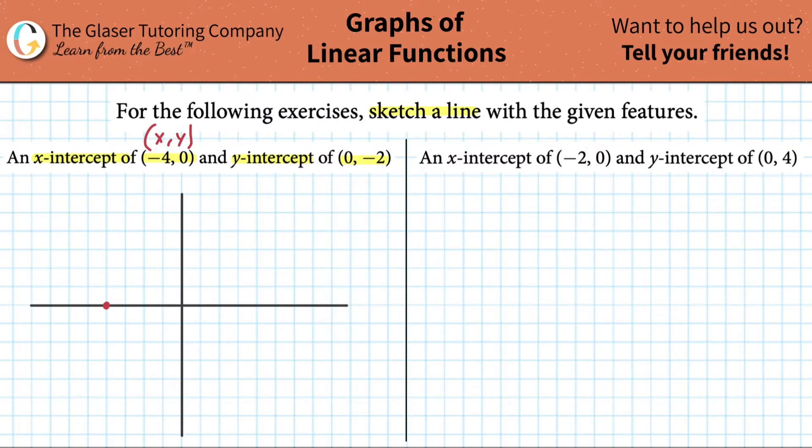Same thing now, not to belabor the point. Let's do the y-intercept. So it's going to have an x-value of 0, meaning we're not going to go left or right. We're just going to go up or down. And then we have to go down to negative 2. So right here. And now simply just draw the line.